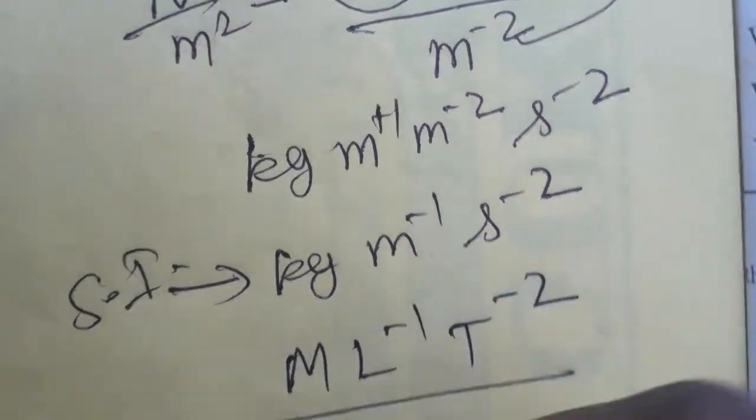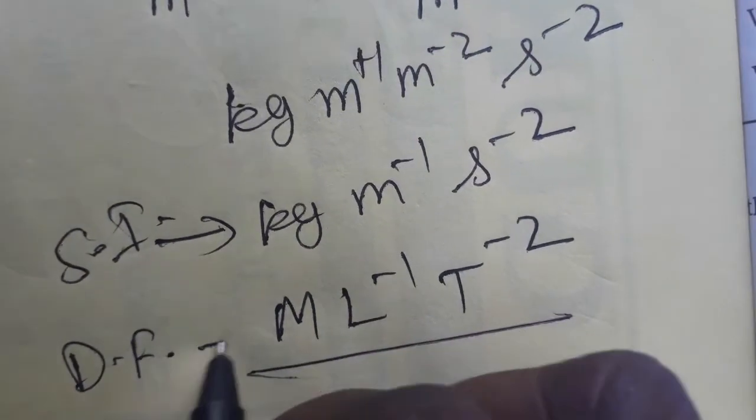So M L minus 1 T minus 2 is the SI unit and dimensional formula for shear modulus. Thank you.